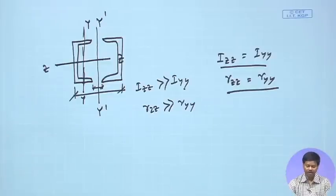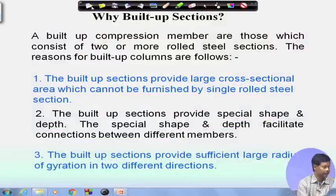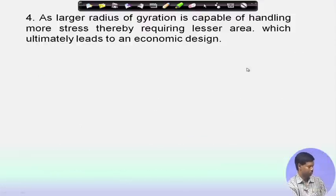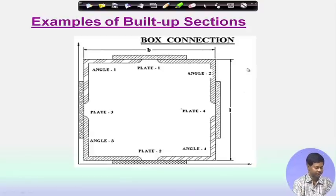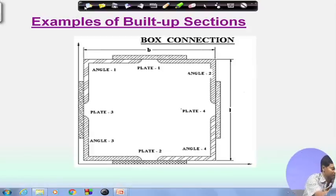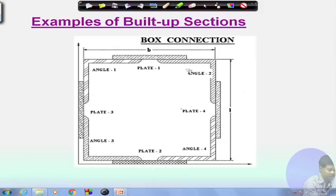We vary the spacing between the two members until Rzz equals Ryy. In this way we determine the configuration of the built-up member. As an example, we can use four angle sections to make a box-type cross-section using lacing or batten plates, which I will discuss later. This is one example where the built-up section increases both Ixx and Iyy.